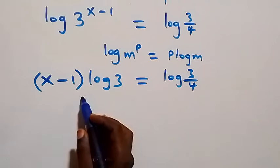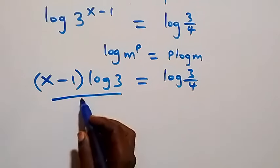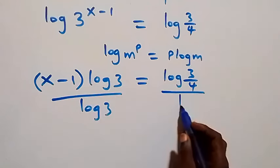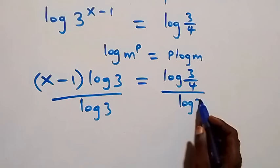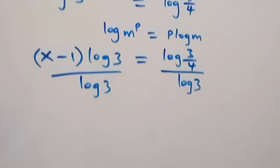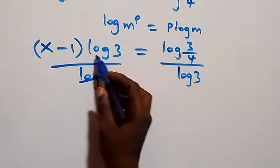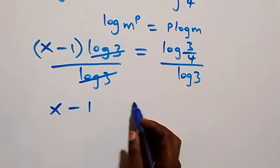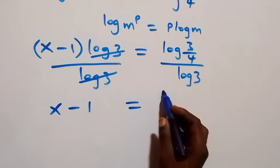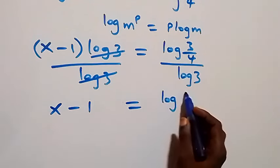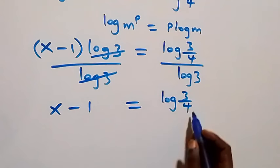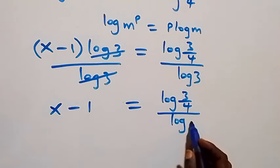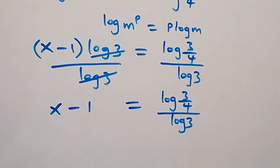We divide both sides by log 3 — divide this side by log 3 and also this side by log 3. The log 3 terms cancel each other, so we have x minus 1 left, which is equal to log(3/4) over log 3.